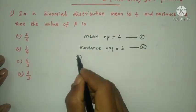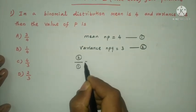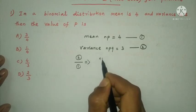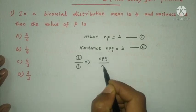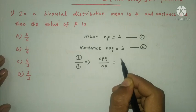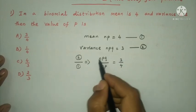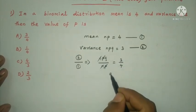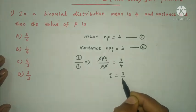Second equation divided by first equation, this implies npq divided by np equal to 3 by 4. n and p cancel, then q equal to 3 by 4.